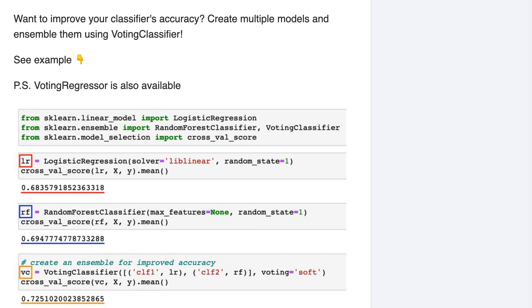So in this case, we ensembled a logistic regression model and a random forests model. Because their predictions are generated using completely different processes, they are likely to make different types of mistakes, and thus they're good candidates for ensembling.